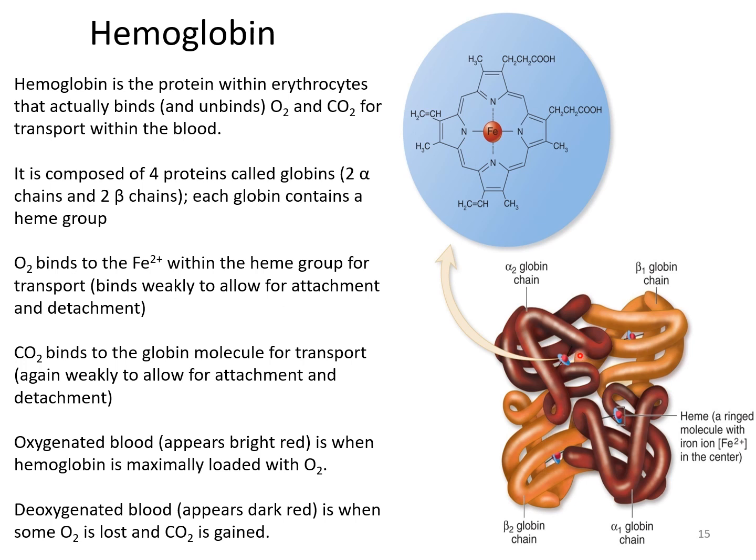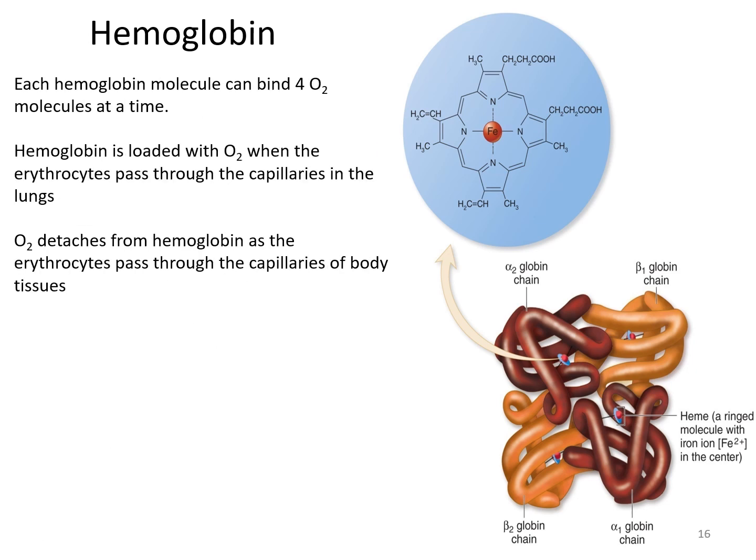Each hemoglobin molecule can bind four oxygen molecules at a time. Hemoglobin is loaded with oxygen as erythrocytes pass through the capillaries in the lungs — oxygen from inhaled air attaches to hemoglobin in blood traveling through the lungs. Oxygen then detaches from hemoglobin as blood goes through the capillaries of the body tissues, where it enters cells for their metabolic processes.